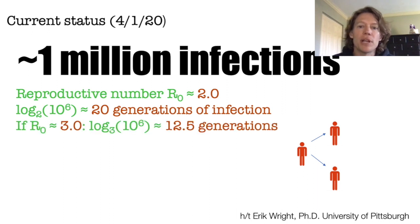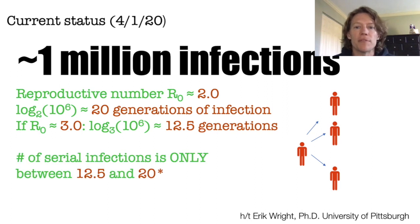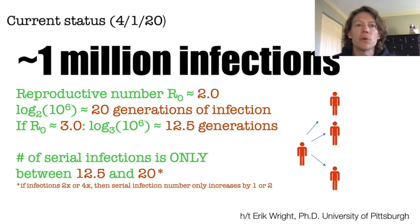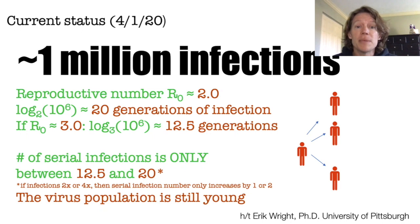Likewise, if we change our estimate of R0, the reproductive number, to be 3, the estimate changes to only 12.5 generations. So the total number of serial infections is between 12.5 and 20. And if the total number of infections is actually 2 million or even 4 million, then this number of serial infections increases by only one or two. So this means that the virus population is quite young in an evolutionary sense.